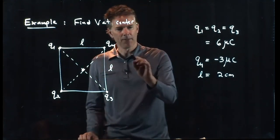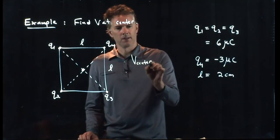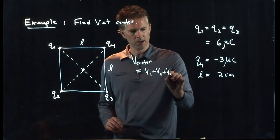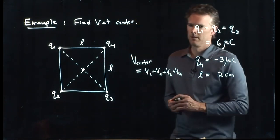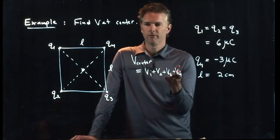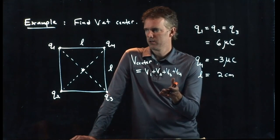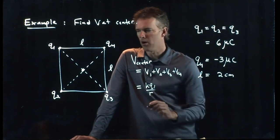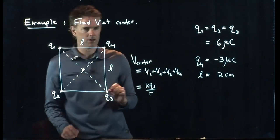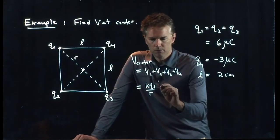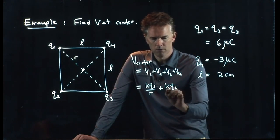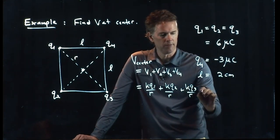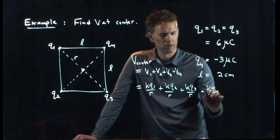So if I want V at the center, that is just V1 plus V2 plus V3 plus V4. We know what V is for a point charge. V1 becomes KQ1 divided by R, where this distance here is R. V2 is KQ2 over R, V3 is KQ3 over R, and V4 is KQ4 over R.